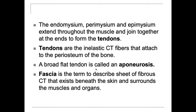When you look at the latissimus dorsi muscle — a wide back muscle — it originates on the iliac crest, sacrum, lumbars, and the lower six thoracic vertebrae. Because it has such a broad origin spanning the lower six thoracics to the lower five lumbars, sacrum, and ilium, that broad flat tendon is called the thoracolumbar aponeurosis — named because it originates on the thoracic and lumbar spine.